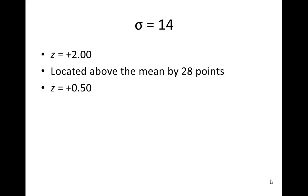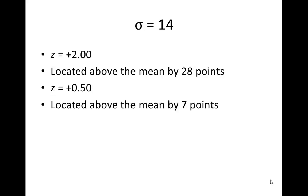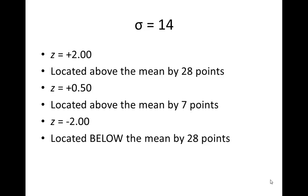If we have a z-score of 0.5, you can figure it in your head — it's half. Half of a z-score would be half of a standard deviation, so it's located above the mean by seven points. What about a z of negative 2? A z-score can be positive or negative, indicating if it's above or below the mean. So a z-score of -2.00 is located below the mean by 28 points.